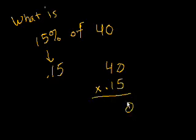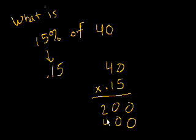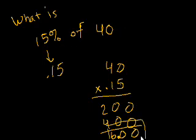So let's say 40 times 0.15. 5 times 0 is 0. 5 times 4 is 20. Bring down, put a 0 there. And then 1 times 0 is 0, 1 times 4 is 4. And you get 600. Then you count the decimal spots: 1, 2. No decimals up there, so you go 1, 2. Put the decimal there. So 15% of 40 is equal to 0.15 times 40, which equals 6.00. Well, that's just the same thing as 6.